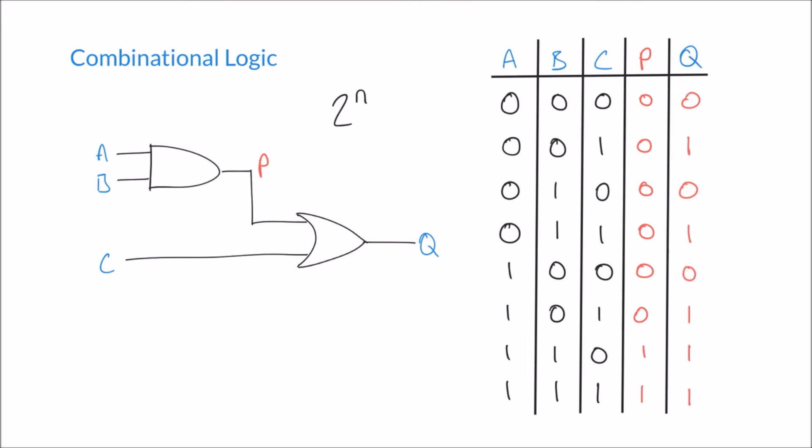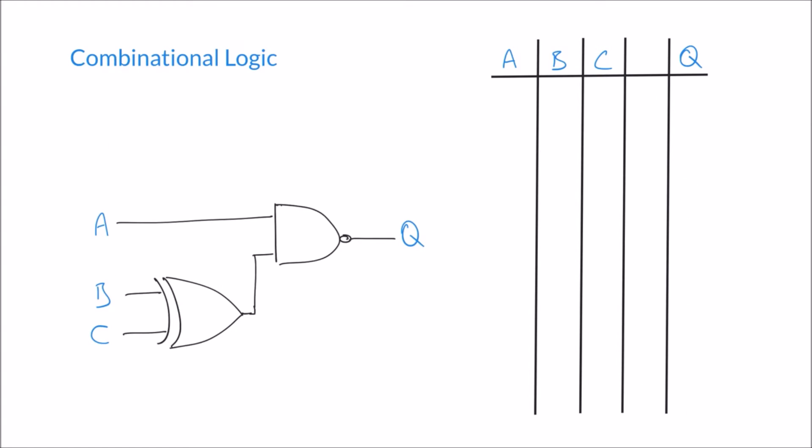So now we've determined the output Q for every possible combination in this logic circuit. Let's look at one more example, and a very similar idea. I have now an XOR gate or an exclusive OR gate connected to a NAND gate. And again, I'll do the same thing and create an intermediate step here, P.